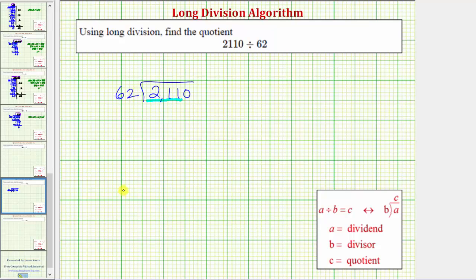62 would round to 60, and 211 would round to 210. Because three times 60 equals 180, or three 60s in 210 with a remainder of 30, it's reasonable to assume there would be three 62s in 211. So let's place a 3 in the quotient in the tens place value above the one, and now multiply by the divisor.